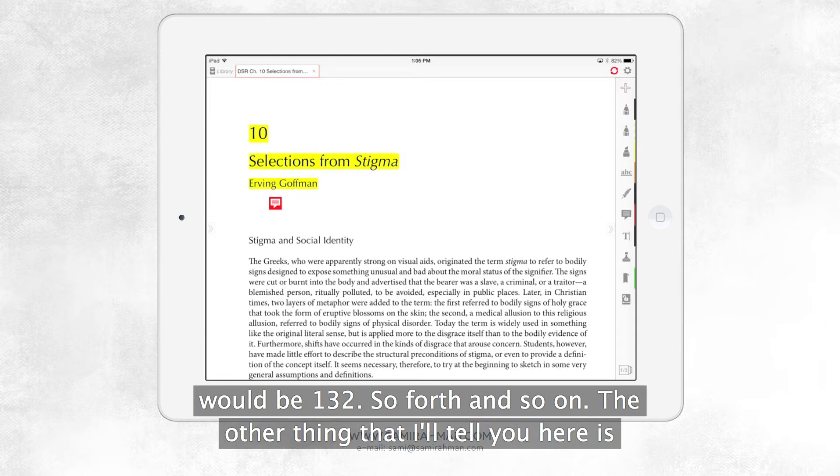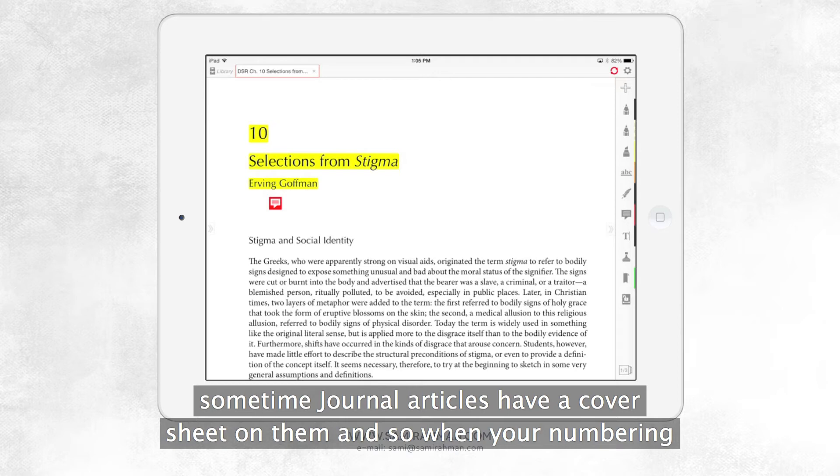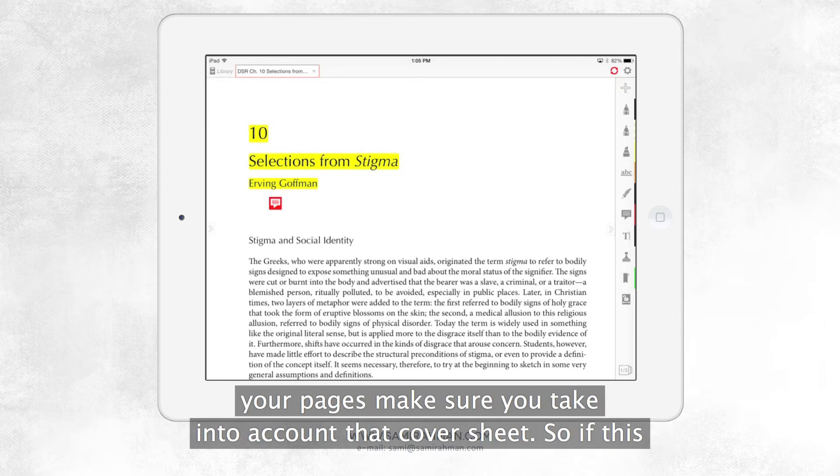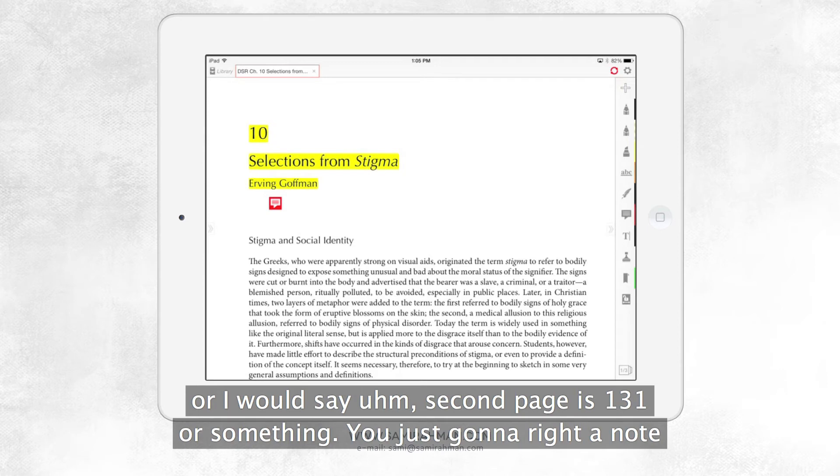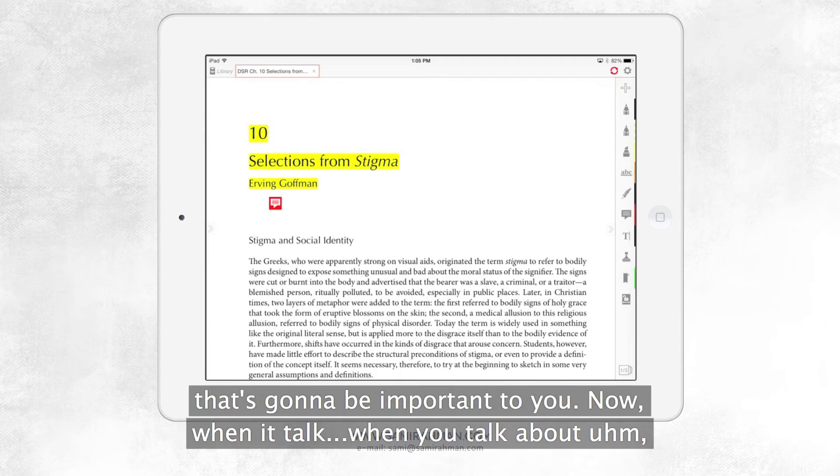The other thing that I'll tell you here is sometimes journal articles have a cover sheet on them. And so when you're numbering your pages, make sure you take into account that cover sheet. So if this had a cover sheet and the second page was 131, then I would either say start on 130 or I would say second page is 131 or something. So you just got to write a note that's going to be important to you.